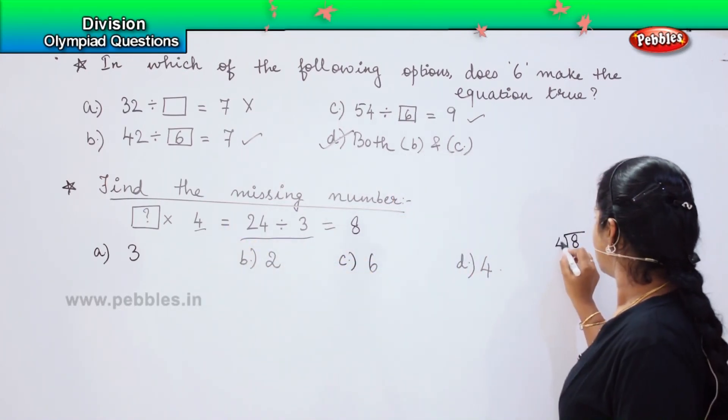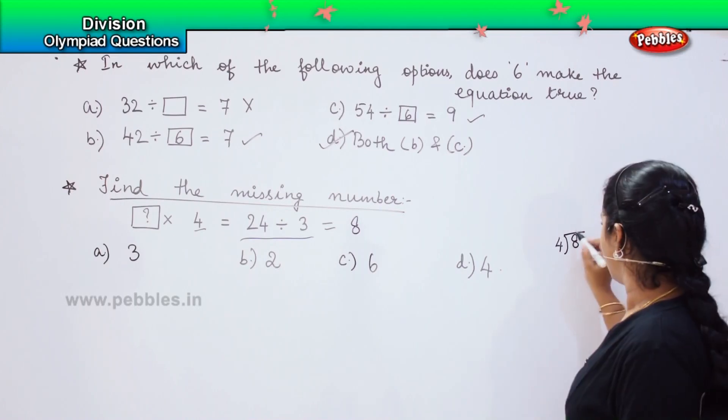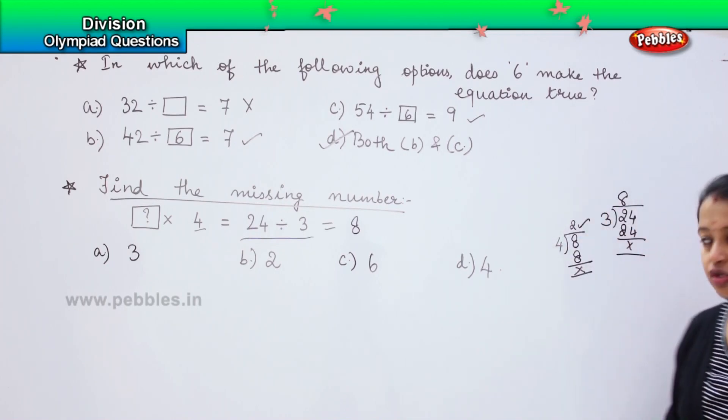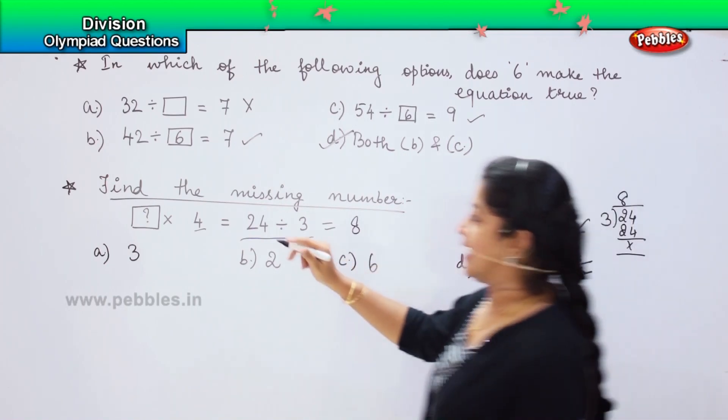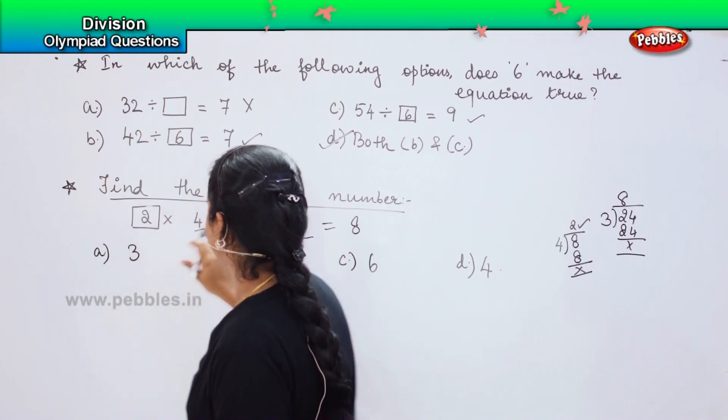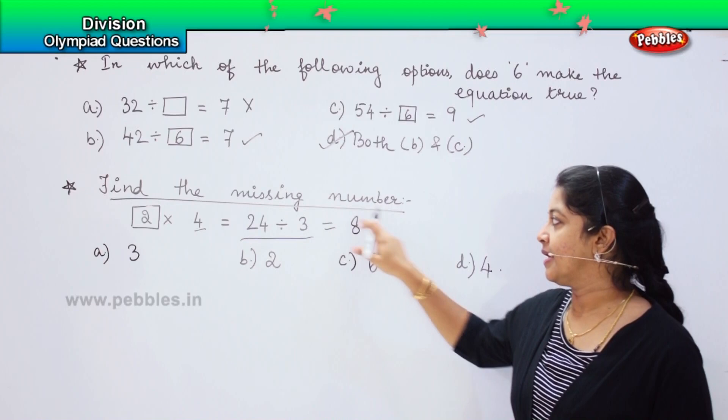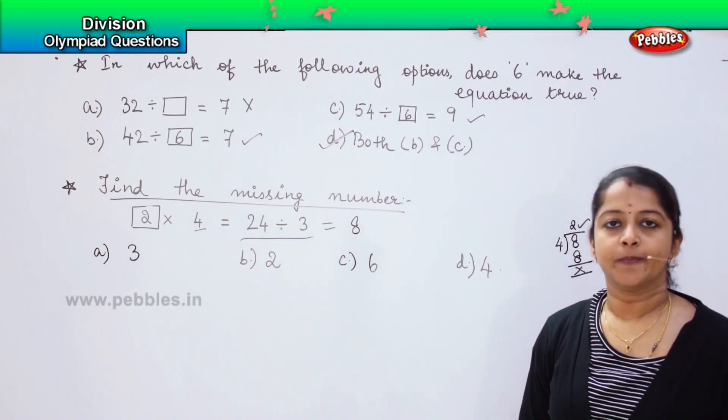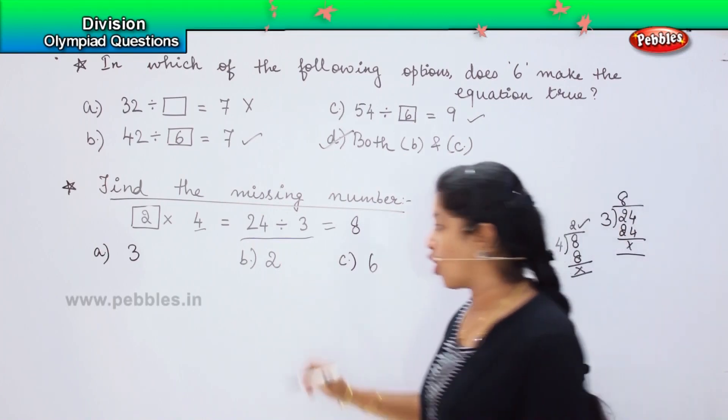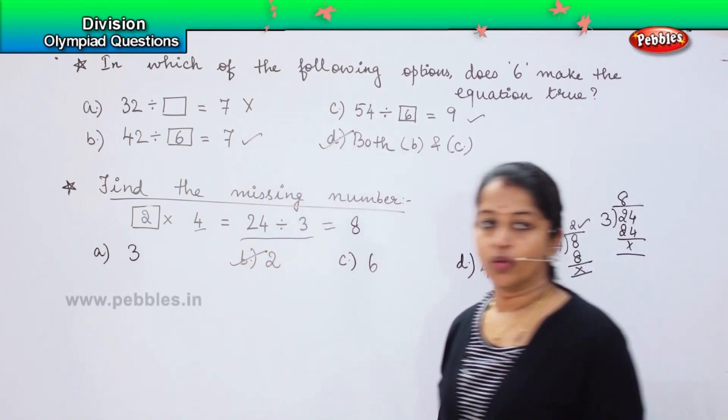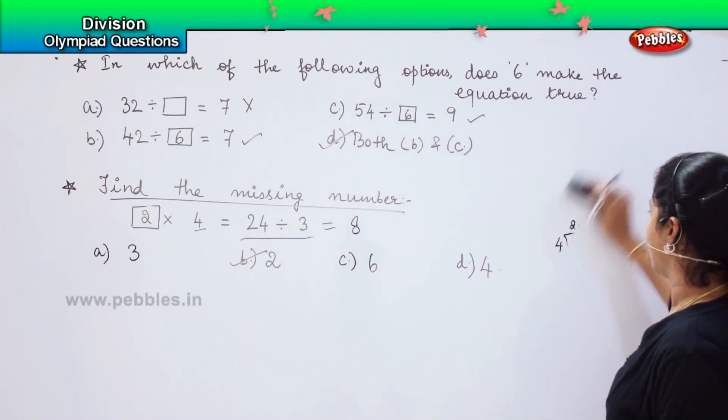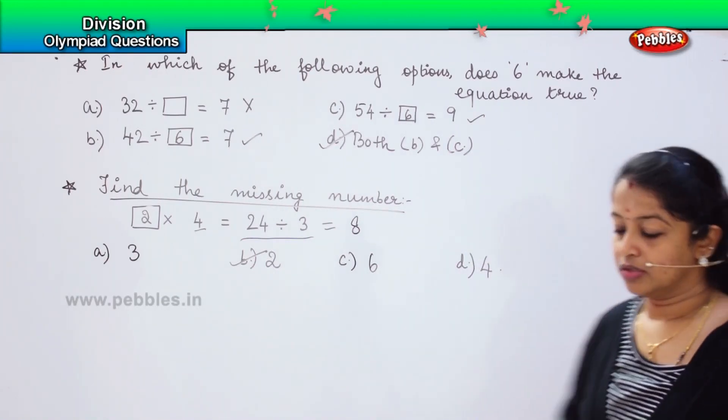8 divided by this number 4. 4 1's are 4, 4 2's are 8. My quotient is 2. Which means that if I multiply 2 with 4 and I divide 24 by 3, I will be getting the answer 8. Where is 2 here? Yes. Option B is my right answer. Are you clear? Did you understand this type of question?